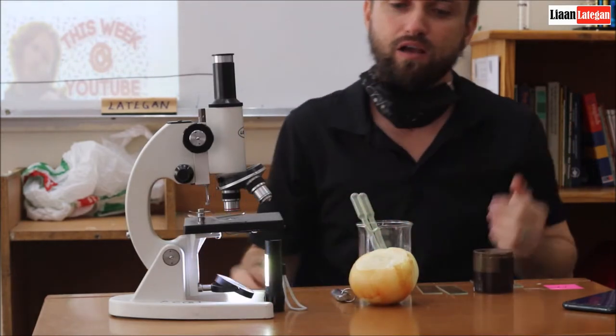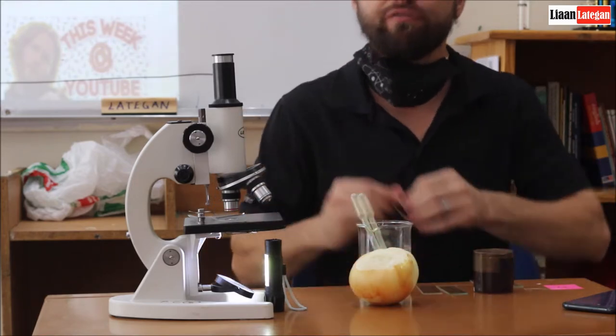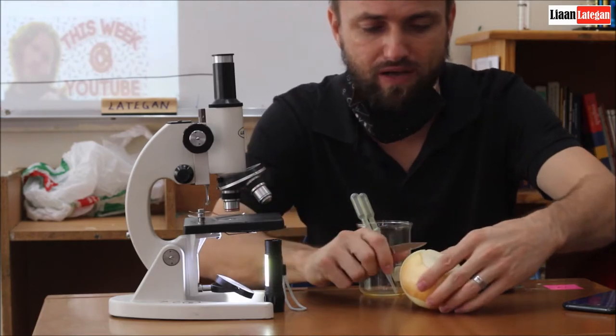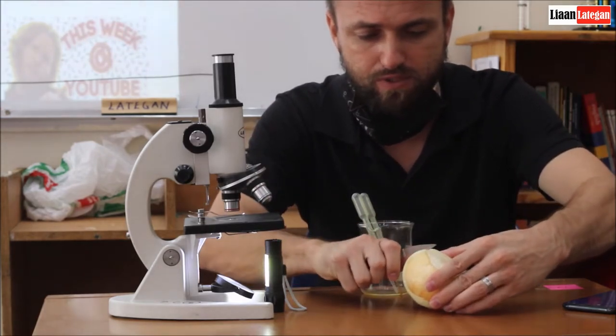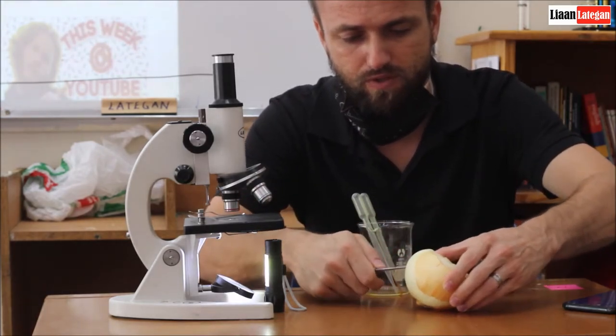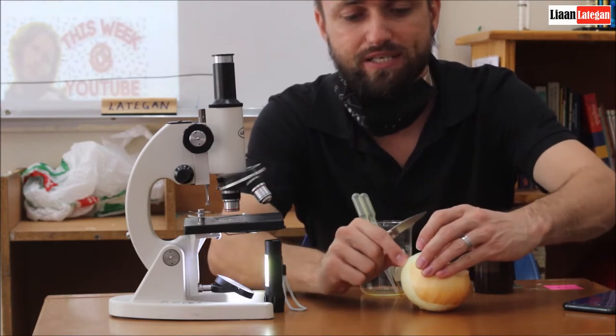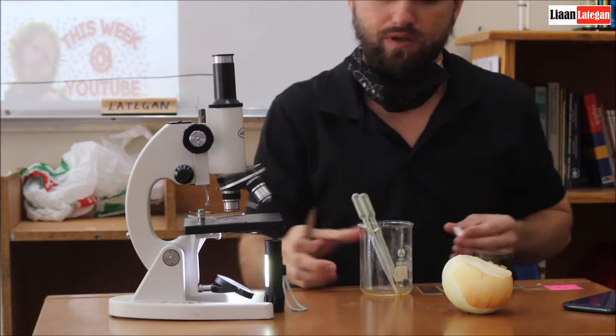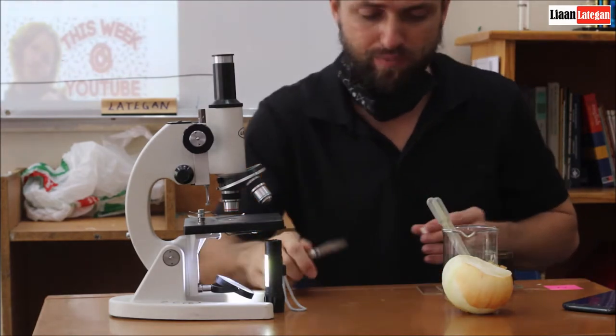Then we are going to utilize a sharp knife and cut a piece of onion. What we want is the epidermis layer or a skin from the onion.